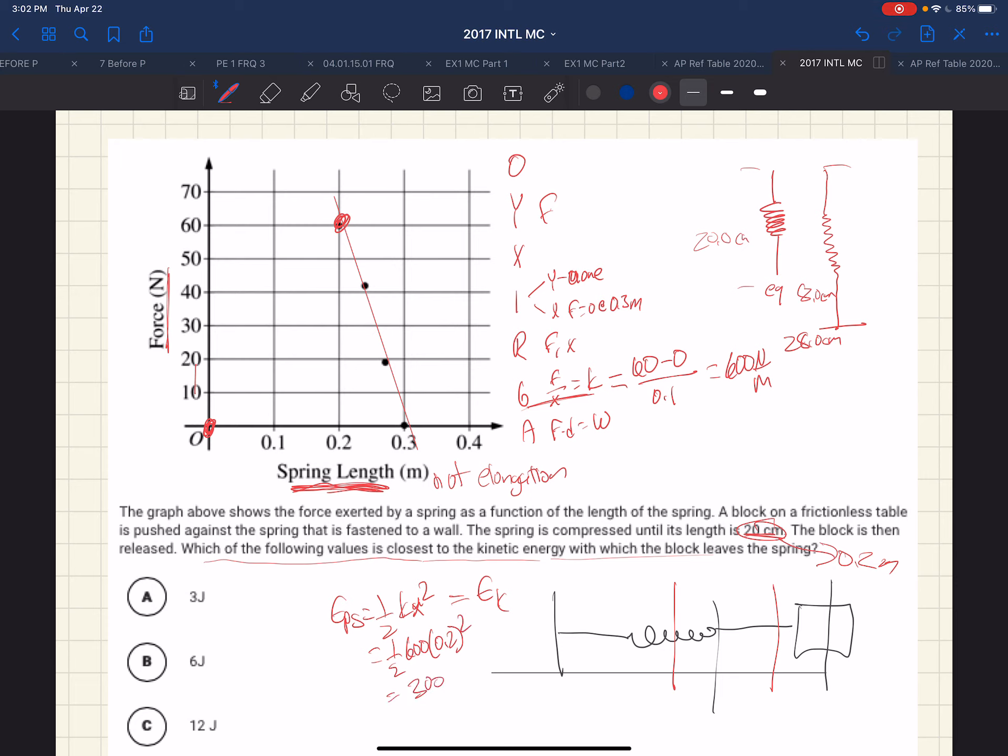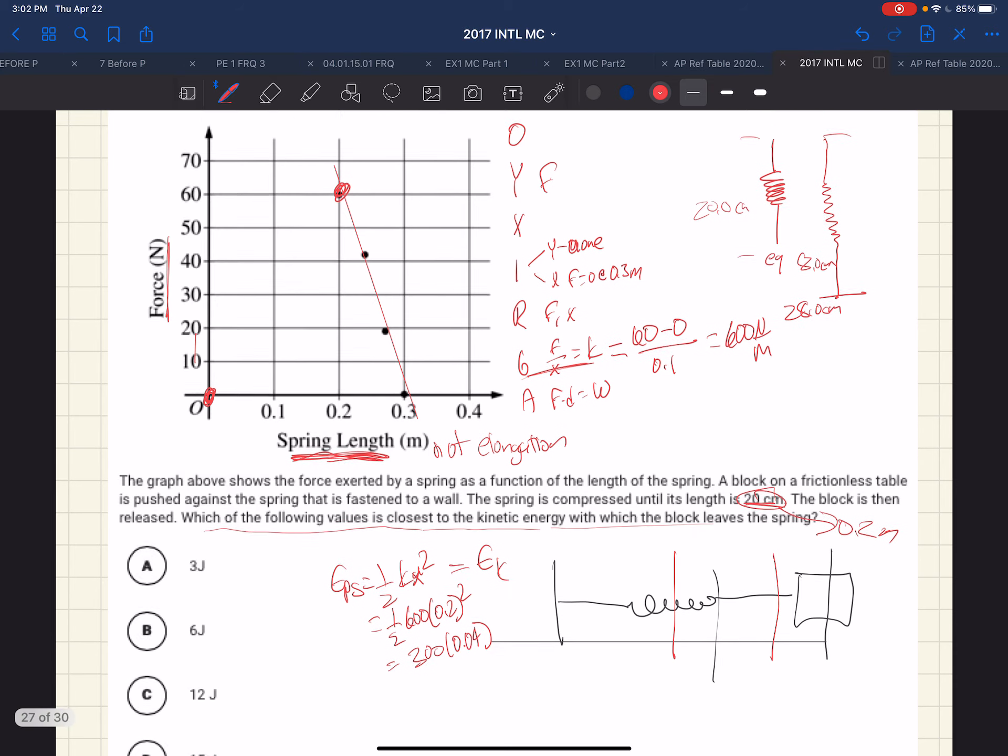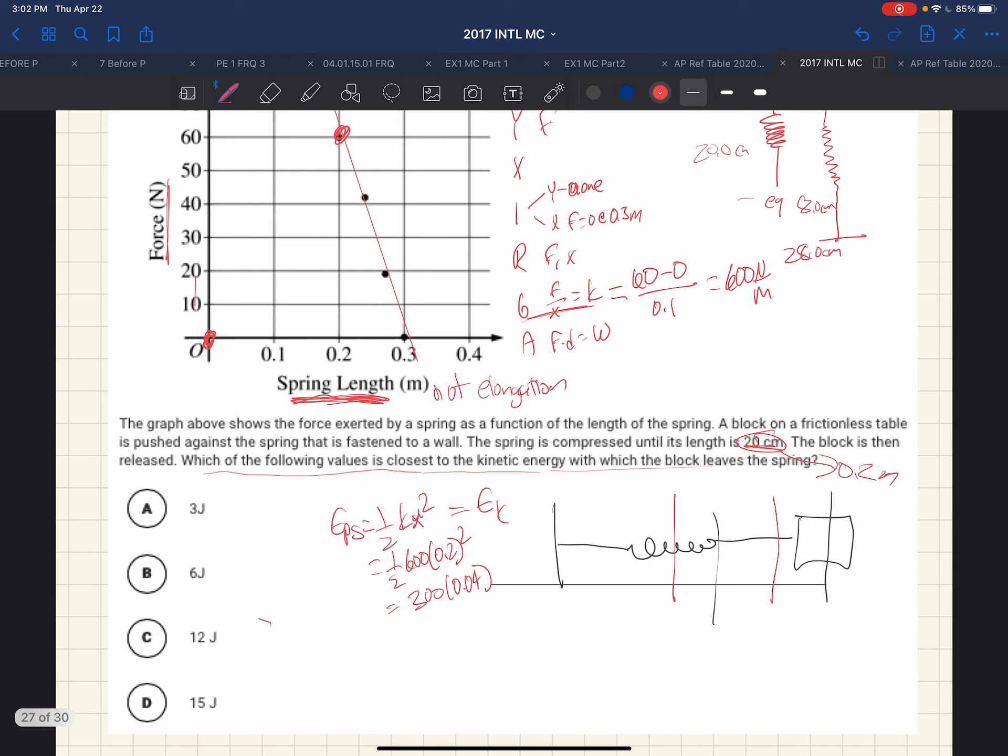So we have 300 times 0.04. Which we can then see the 4 and the 3 is going to give us a 12. 12 joules.